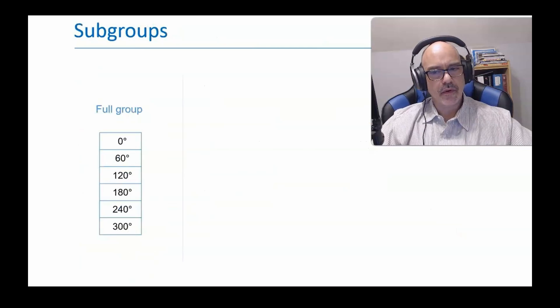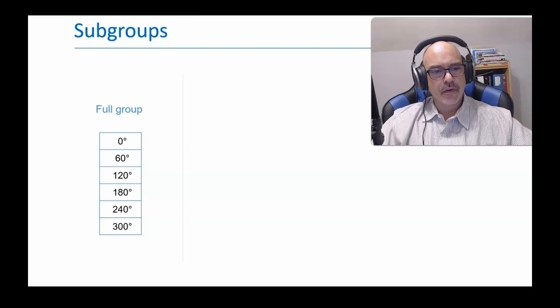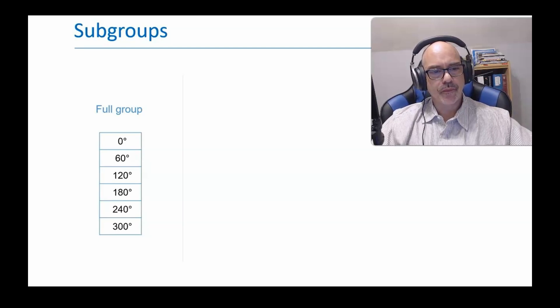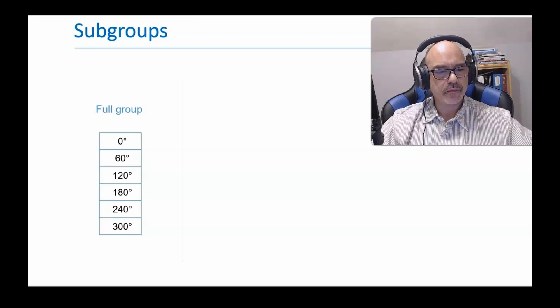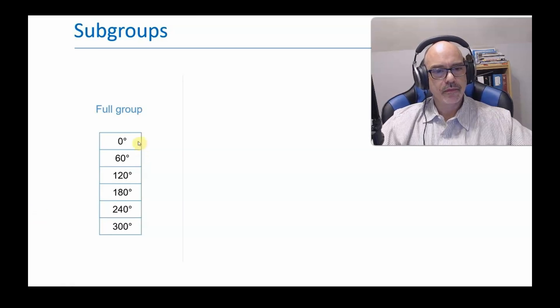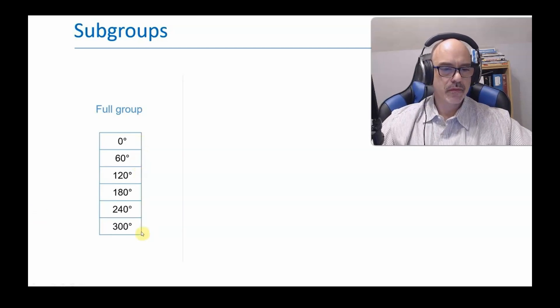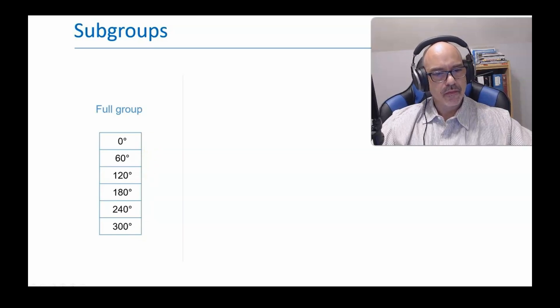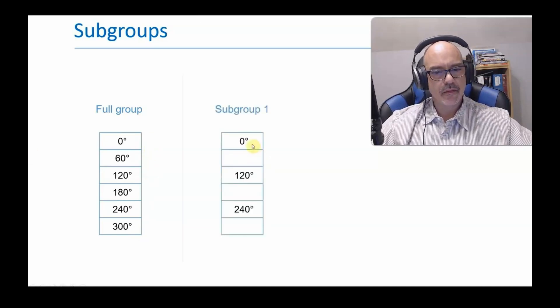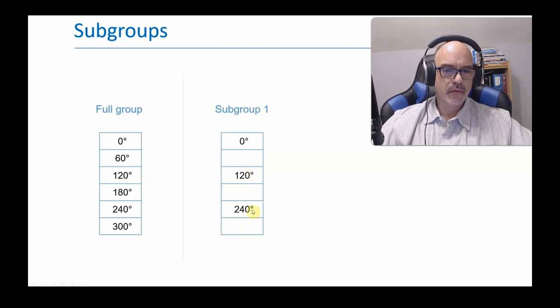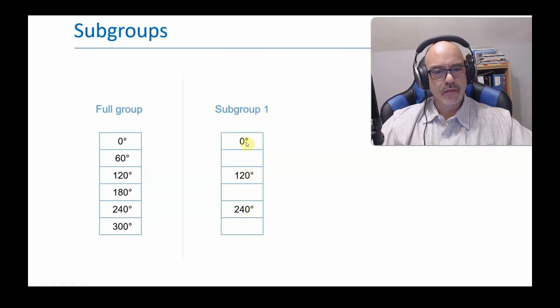Let's define the term subgroup, which we have used to describe information and uncertainty. A subgroup is a smaller group that is a subset of the full group. These six elements describe the full group. What subgroups does it have? These three elements form group 120, so that is a subgroup of the full group.